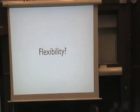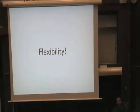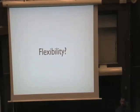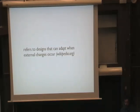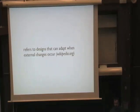Before we get started, let's look at flexibility and what it means. In terms of anatomy, my joints are flexible, which is why I can move my arms, bend my elbows, and probably kneel down to tie my shoelace. But in an engineering view, Wikipedia puts it well: flexibility refers to designs that can adapt when external changes occur. If your application interacts with something you don't control, you're always facing external changes and must adapt quickly.